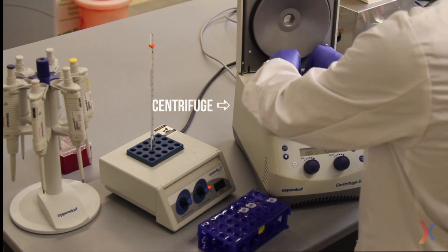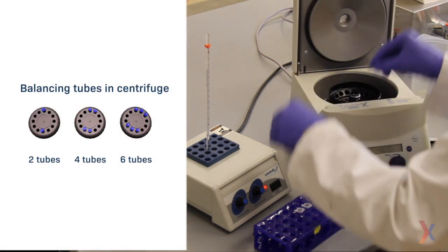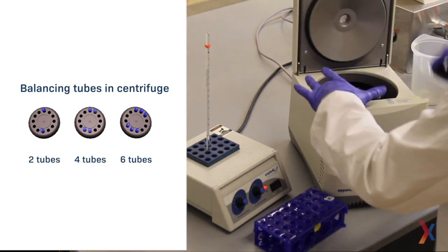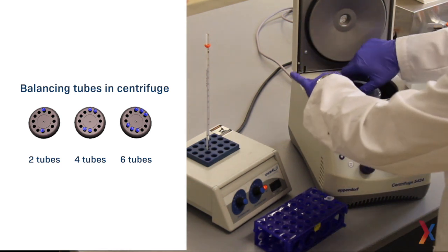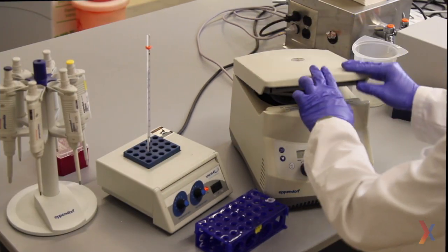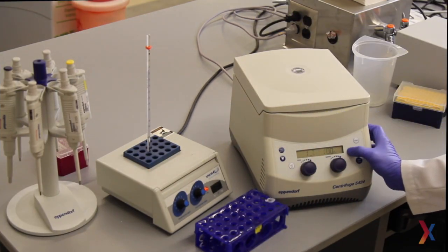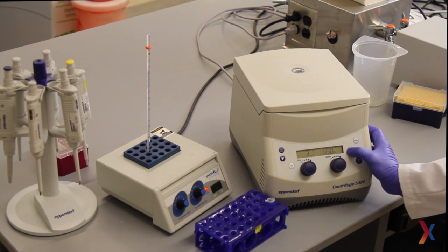I put the first two samples here and then I make sure to put the other two samples on the opposite side of the centrifuge so that it remains balanced. As always, add the lid and close, and for this purpose I'll just do a 10-second spin by holding the short button.